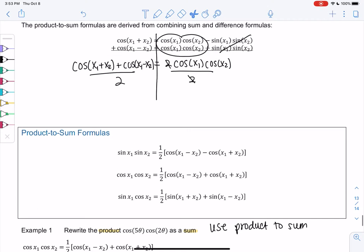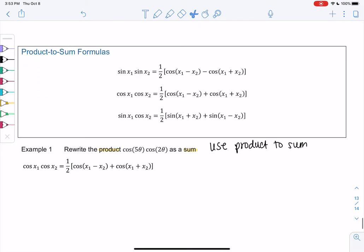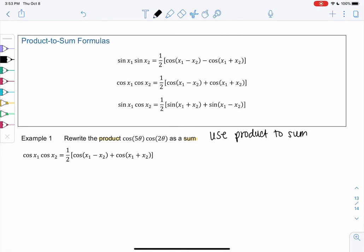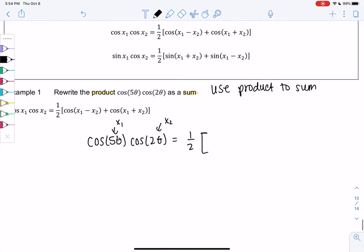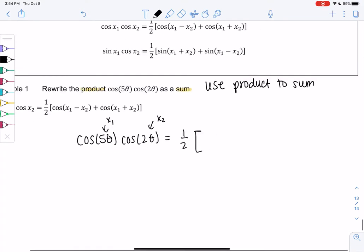And again, they're all derived from these formulas, so you could derive them if you want to be convinced. Let's go ahead and just plug in. So cosine of 5θ, that'll be my x₁, times cosine of 2θ, that'll be my x₂, equals one-half.